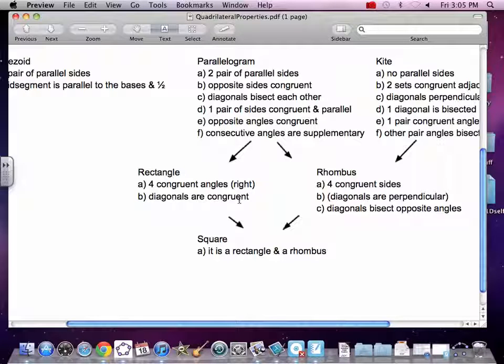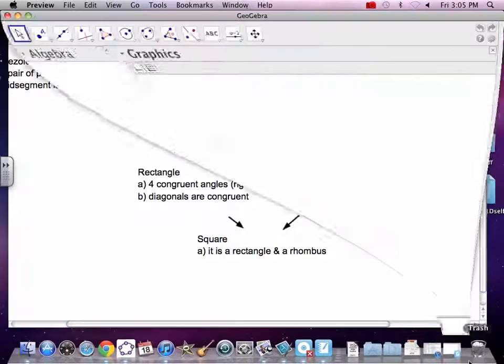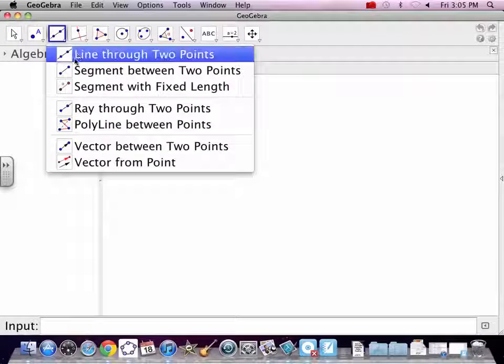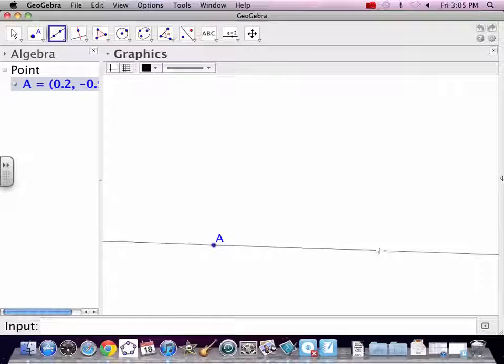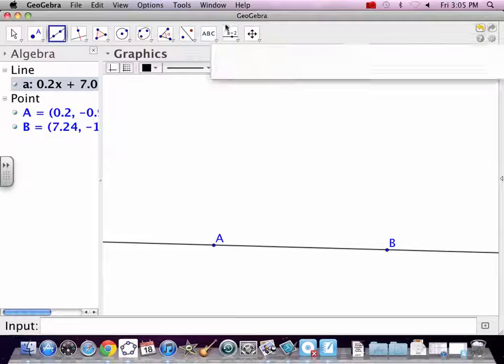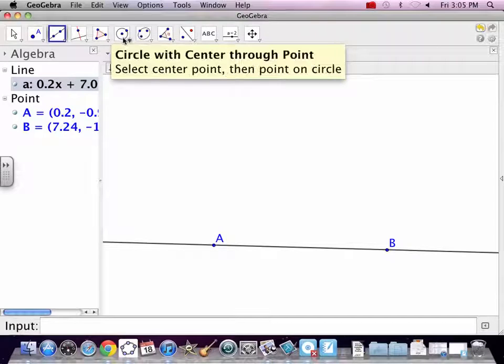And then also diagonals are congruent, so we can construct it with either of those. Let's just go after four right angles. So let's just start with a line somewhere. And again, anything I can do in GeoGebra, we can do on paper.